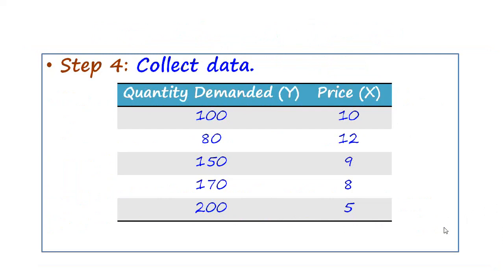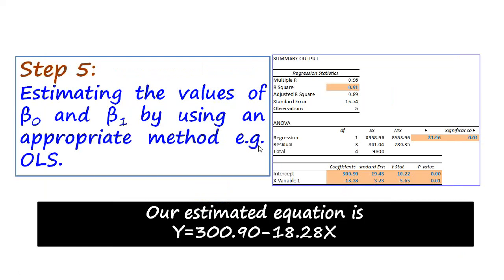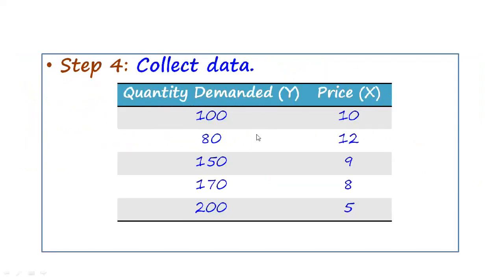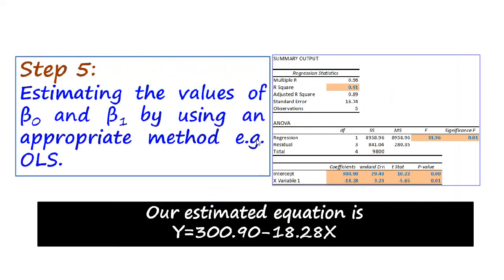In step four, we collect data. This is a hypothetical dataset for illustration purposes — we have very few data points here, but in reality the sample size is quite large. In step five, we estimate the values of the parameters. In practice, different software packages readily do this for us. Here is the estimated equation: Y equals 300.90 minus 18.28X, where 300.90 is the estimate of β₀ and 18.28 is the estimate of β₁.